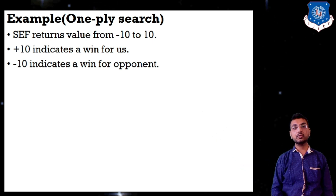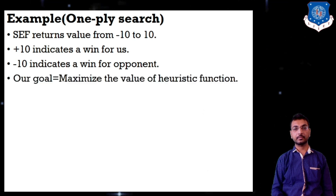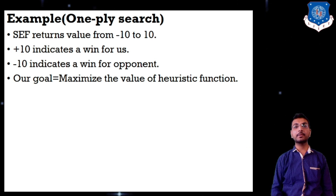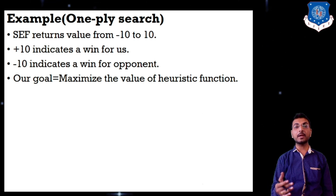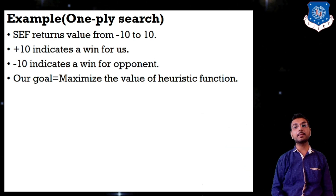These two are the bounding values for our range, meaning we lie in the range of minus 10 to plus 10. Our goal is to maximize the value of the heuristic function — that is, to select the best, meaning the maximum value from the available values.